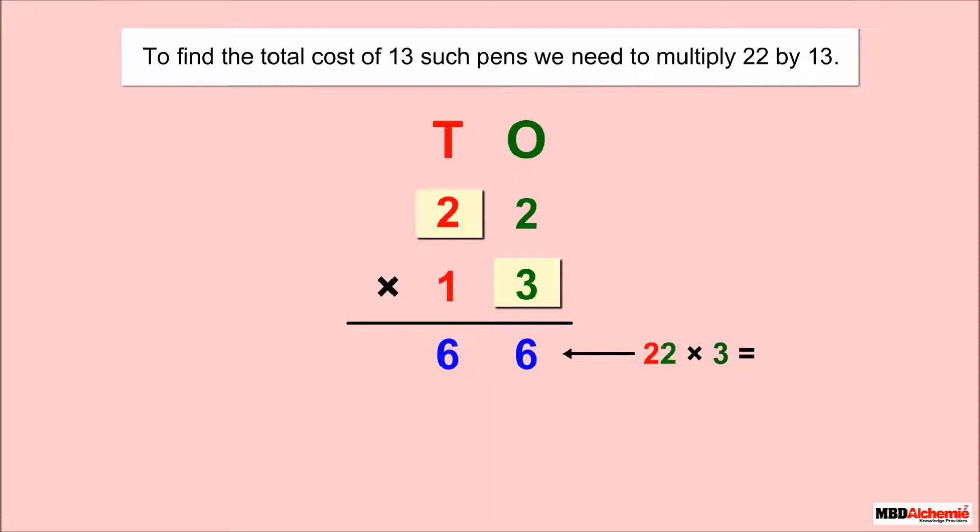Similarly, 2 times 3 is equal to 6. Thus, 22 into three ones give 66.